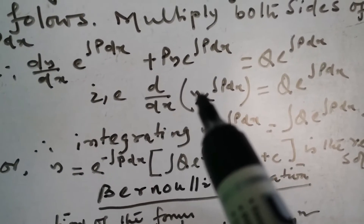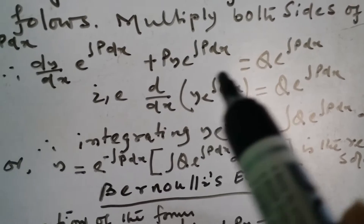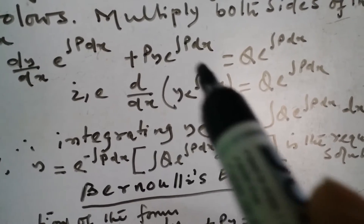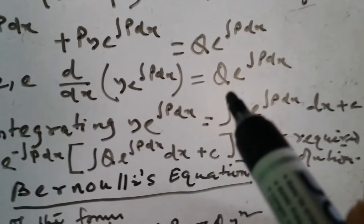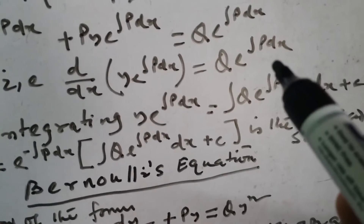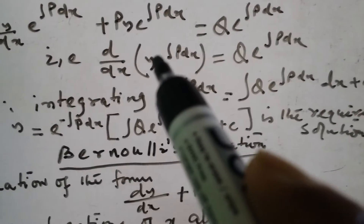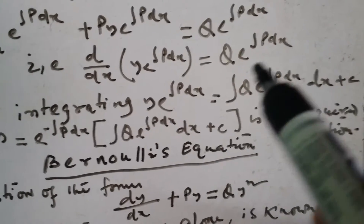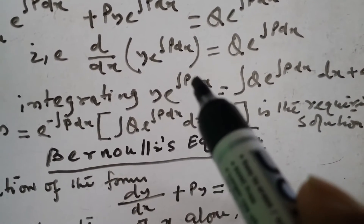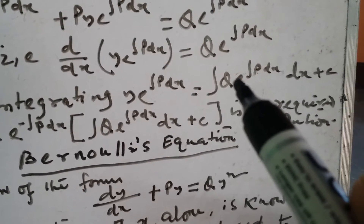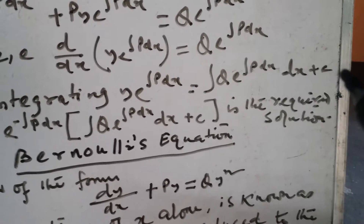It means the derivative of y times e^(∫p dx) — if you differentiate it, you get this expression, and this equals that. So after integrating and multiplying by dx, after integration you get y times e^(∫p dx) equals the integral of q times e^(∫p dx).